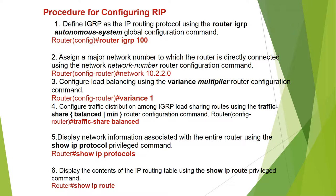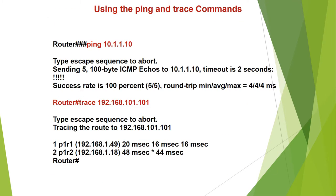Router# show ip protocol. Display the contents of the IP routing table using the 'show ip route' privileged command. Use the ping and trace commands to verify connectivity — for example, ping 10.1.1.10.